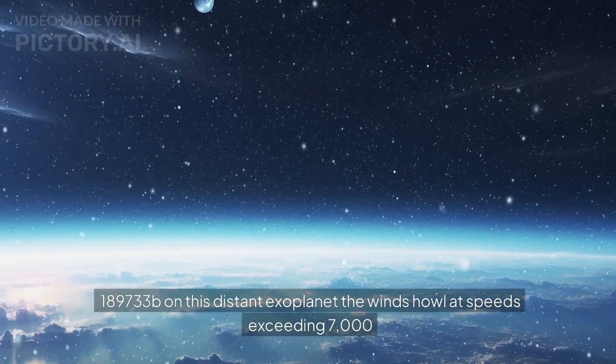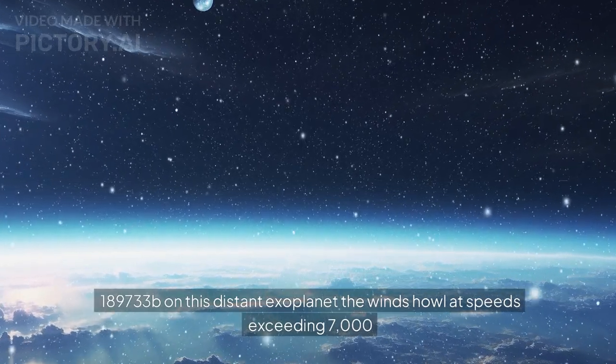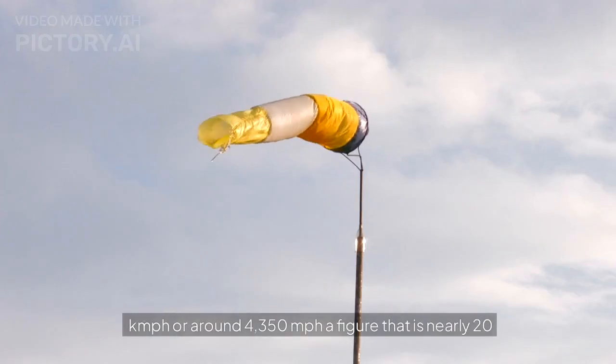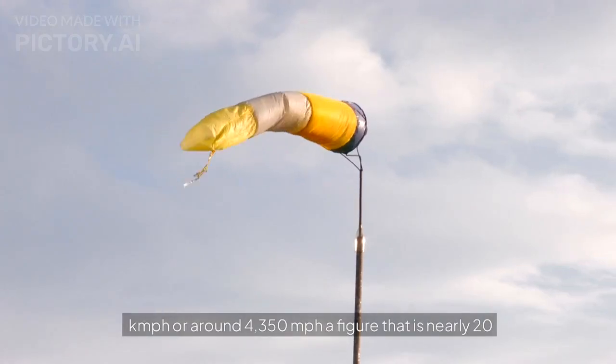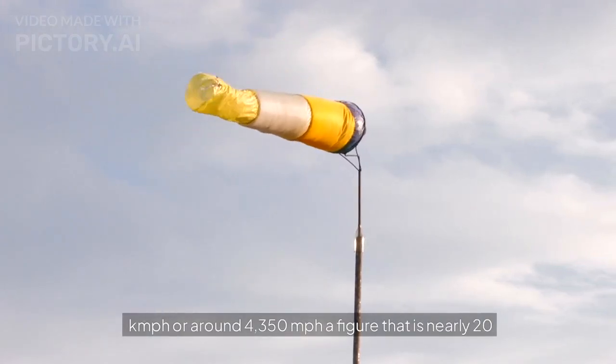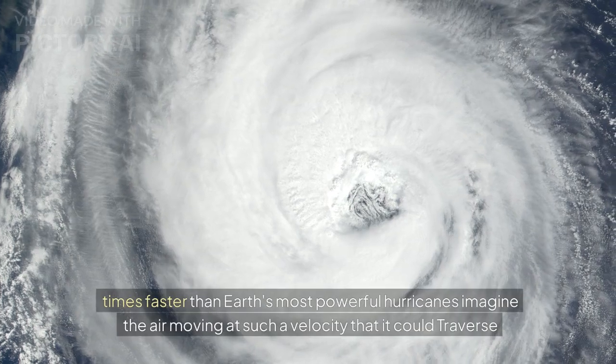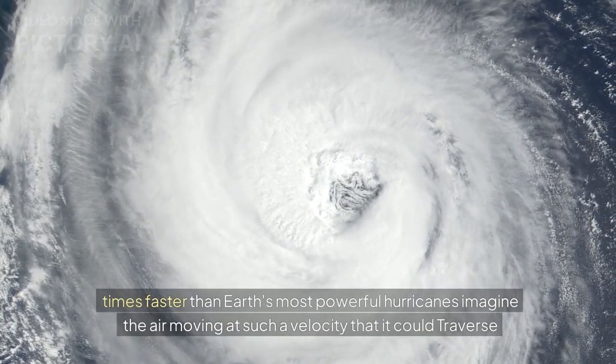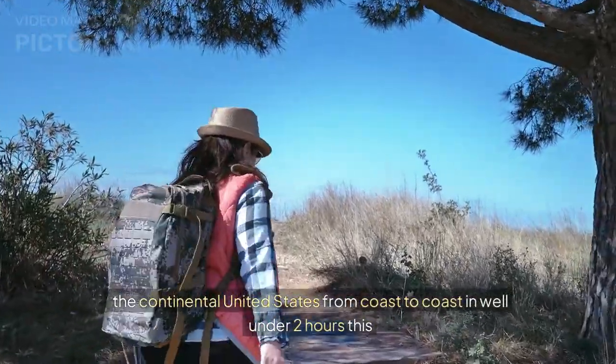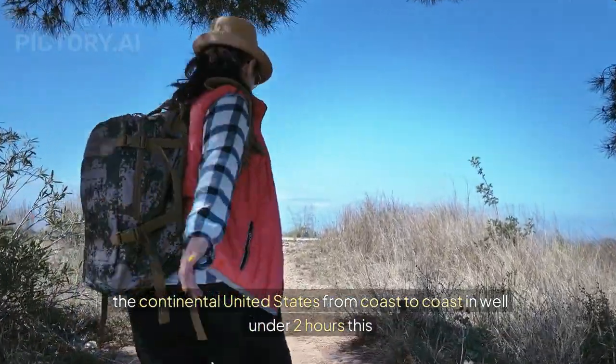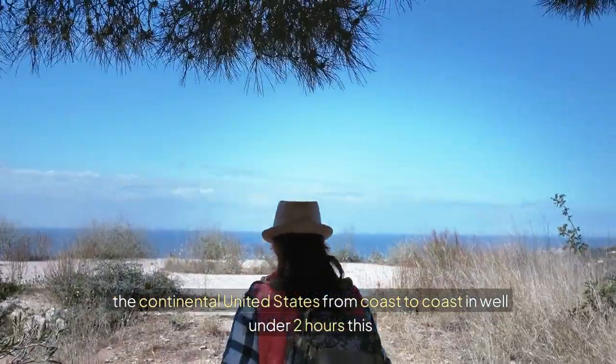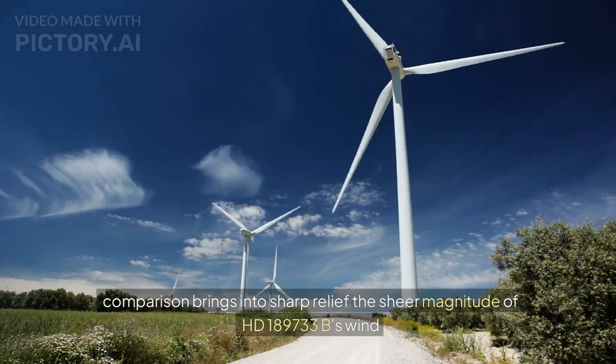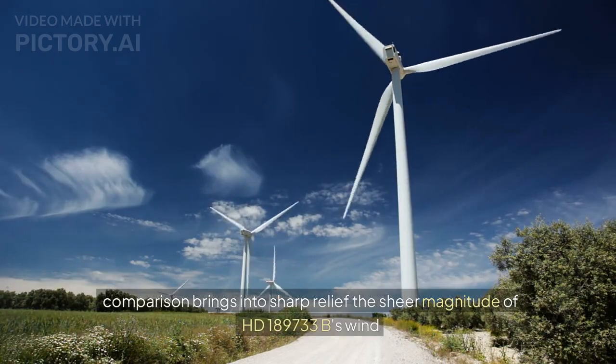On HD 189733b, the winds howl at speeds exceeding 7,000 km/h, or around 4,350 miles per hour, a figure that is nearly 20 times faster than Earth's most powerful hurricanes. Imagine the air moving at such a velocity that it could traverse the continental United States from coast to coast in well under two hours.